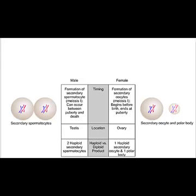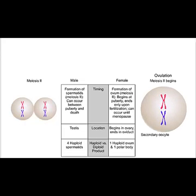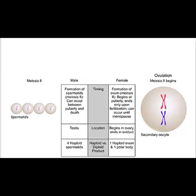Meiosis II occurs within the testis at any time from puberty until death in the male. Meiosis II begins within the ovary only at ovulation in the female, and ends within the oviduct upon fertilization by a sperm cell.